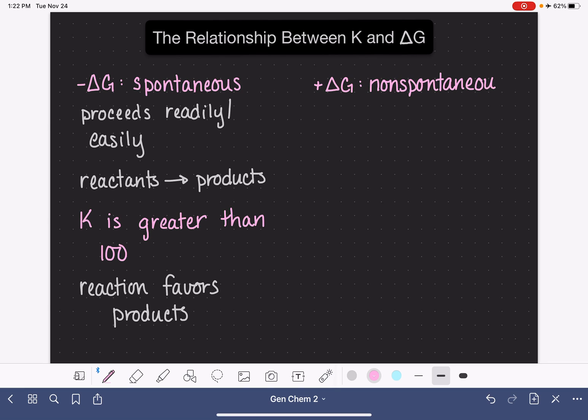And that means that it does not proceed very readily. If we're looking at a reaction going from reactants to products, we might see that the reaction is hesitant. It doesn't move in the left to right direction. There is a large quantity of reactants relative to products.